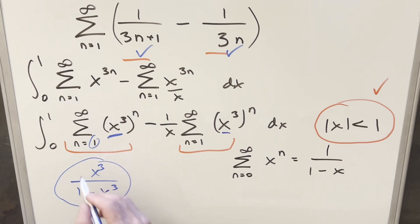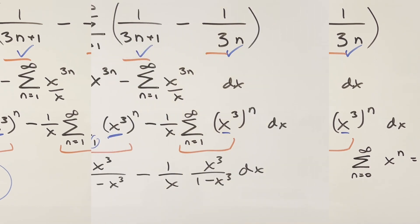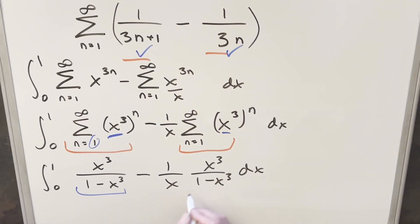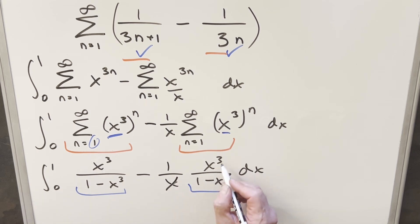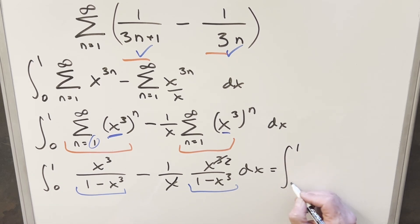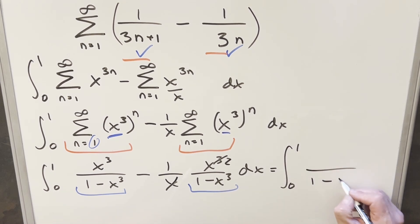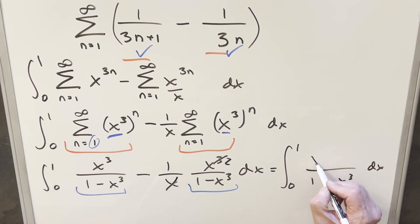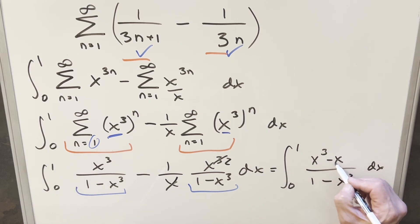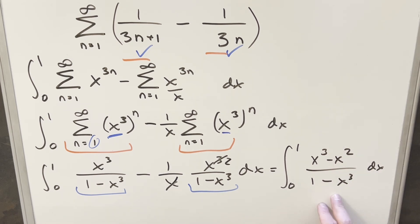We plug in those geometric series values. Before integrating, we can cancel an x from the 1/x factor with one from x cubed, making the numerator x squared. We then get a common denominator of 1 minus x cubed, and the numerator becomes x cubed minus x squared. This is an integral we can handle.